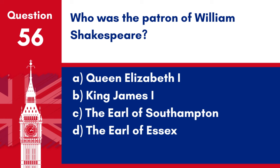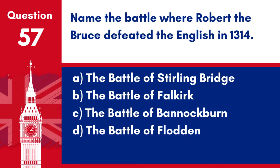Question 56. Who was the patron of William Shakespeare? a. Queen Elizabeth I. b. King James I. c. The Earl of Southampton. d. The Earl of Essex. Answer: c. The Earl of Southampton. The Earl of Southampton is widely believed to have been a patron of William Shakespeare, possibly sponsoring some of his works.